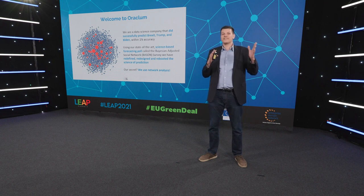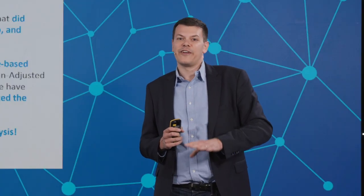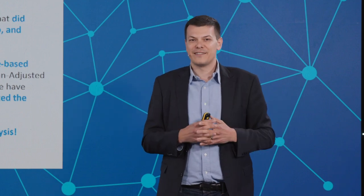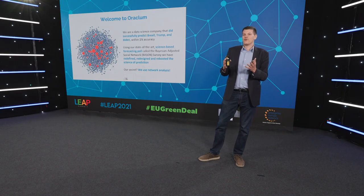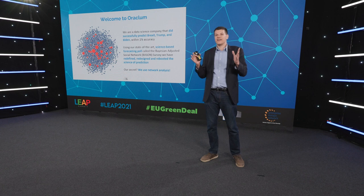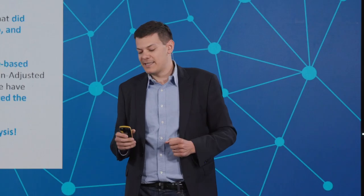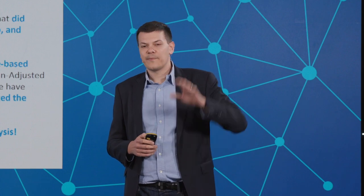The name is Bayesian Adjusted Social Network Survey. I'll show you why Bayesian — there is a certain statistical Bayesian probability element. The point of the whole methodology is that we've redesigned polling and the way of making predictions, and we do this by using social network analysis.